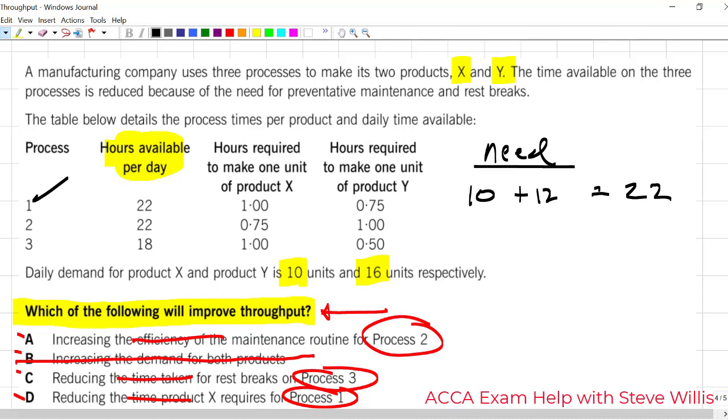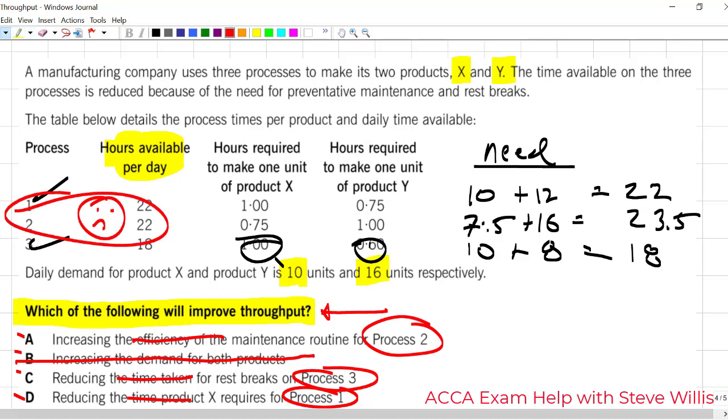Now, process 3. 10 times 1 is 10. Again, 16 times 0.5 is 8. That's 18. Guys, process 3, it's not limiting my production. It's got to be 2. And let's check that. 10 times 0.75, 7.5, right? And then 16 times 1 is 16. So process 2 needs 23.5 hours. But oh my goodness, we only have 22. We've identified process 2 as the bottleneck. Answer is A.